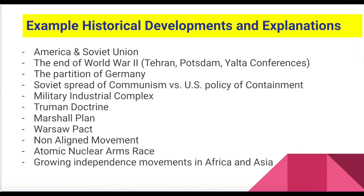You have about seven minutes. Use at least five historical development vocabulary terms in your explanation. On the left side of the screen is an example of historical developments and explanations; on the right is where your paragraph goes. Here are the possible vocabulary words: America and the Soviet Union, the end of World War II reflected in the Tehran, Potsdam, and Yalta conferences, the partition of Germany, the Soviet spread of communism versus the US policy of containment, the military industrial complex, the Truman Doctrine, the Marshall Plan, the Warsaw Pact, the non-aligned movement, the atomic nuclear arms race, and growing independence movements — decolonization — in Africa and Asia.